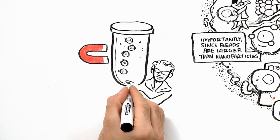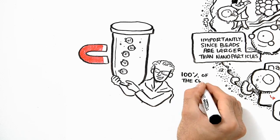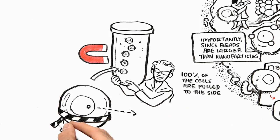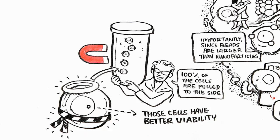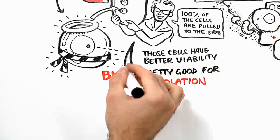In a short period of time, 100% of the cells are successfully isolated, and these cells have better viability and better purity. In other words, big is pretty good for cell isolation.